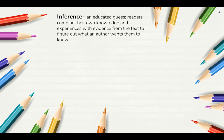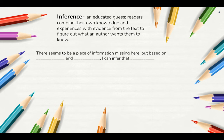Authors sometimes will state thoughts or ideas directly, while other times they will imply or suggest them and expect readers to make an inference. An inference is an educated guess. When readers make inferences, they combine their own knowledge and experiences with evidence from the text to figure out what an author wants them to know. Making an inference is like reading between the lines. A good frame to follow would be: there seems to be a piece of information missing here, but based on blank and blank, I can infer that blank. As you read, you should use text evidence and prior knowledge and experiences to better understand the text.